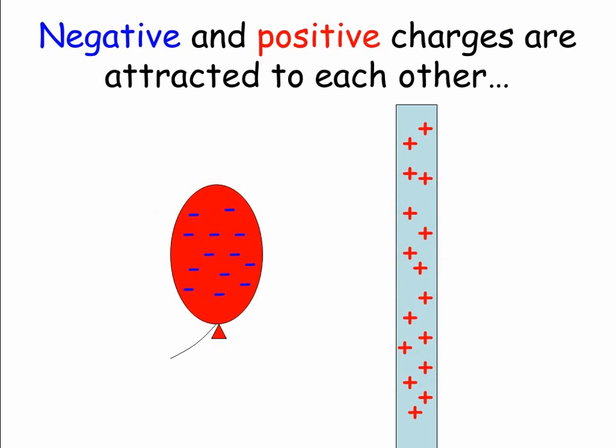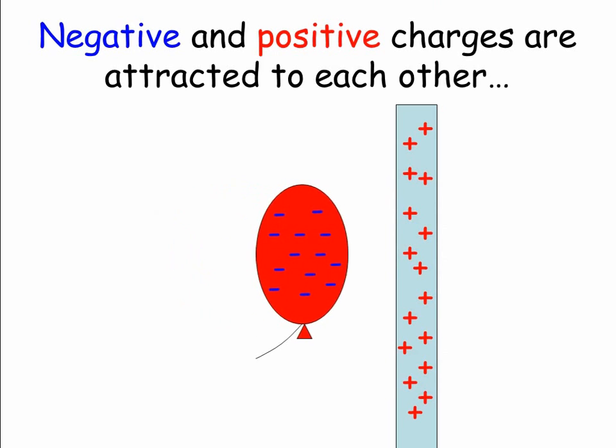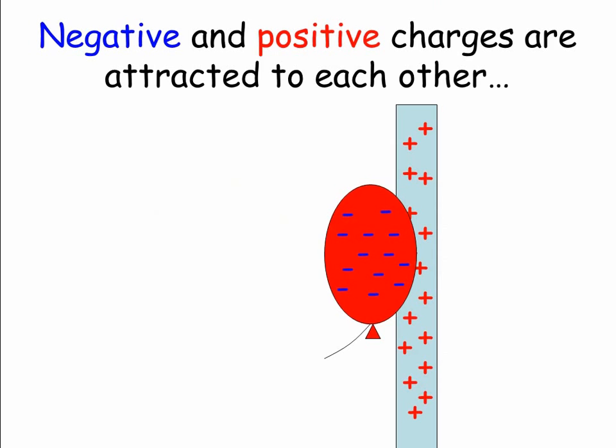Now negative and positive charges are attracted to each other. So here we've got a balloon on the left that's negatively charged, and a ruler on the right that's positively charged, and there's going to be a force of attraction between the two.